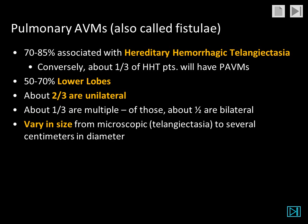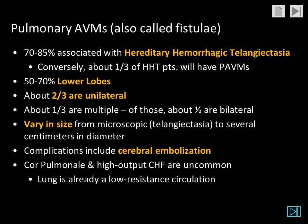The AVMs vary in size from microscopic to several centimeters in diameter. Complications include cerebral embolization through this right-to-left shunt. Cor pulmonale and high-output CHF are relatively uncommon because the lung already has a low-resistance circulation. Cyanosis is possible, but hemoptysis is relatively uncommon.